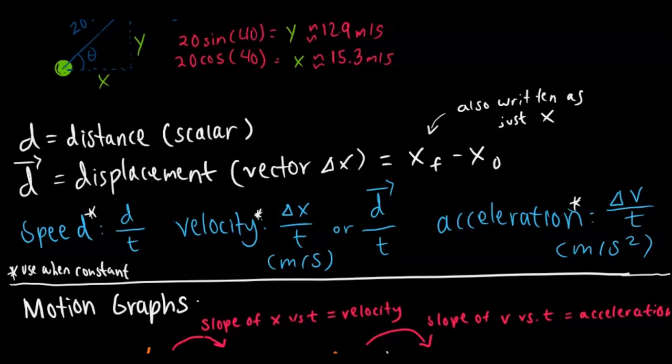Displacement is otherwise known as final position minus initial position. Easy way to think about that is let's say you had a guy who walked for 10 steps and then walked backwards 5 steps. His total distance traveled would be 15 steps, but his displacement, which is change in position, would be 5 steps.